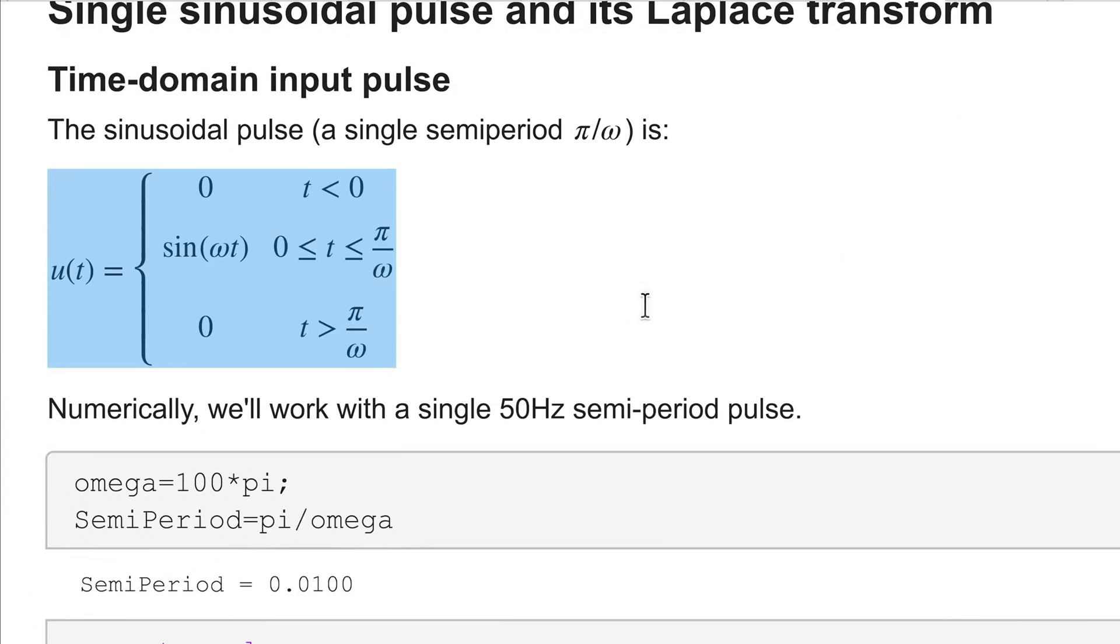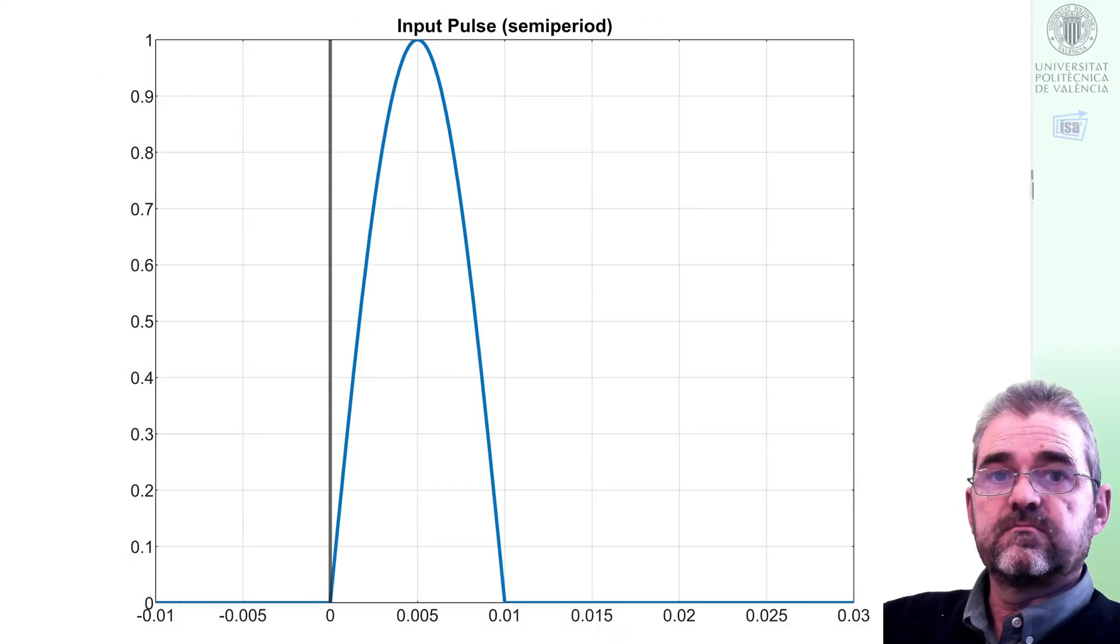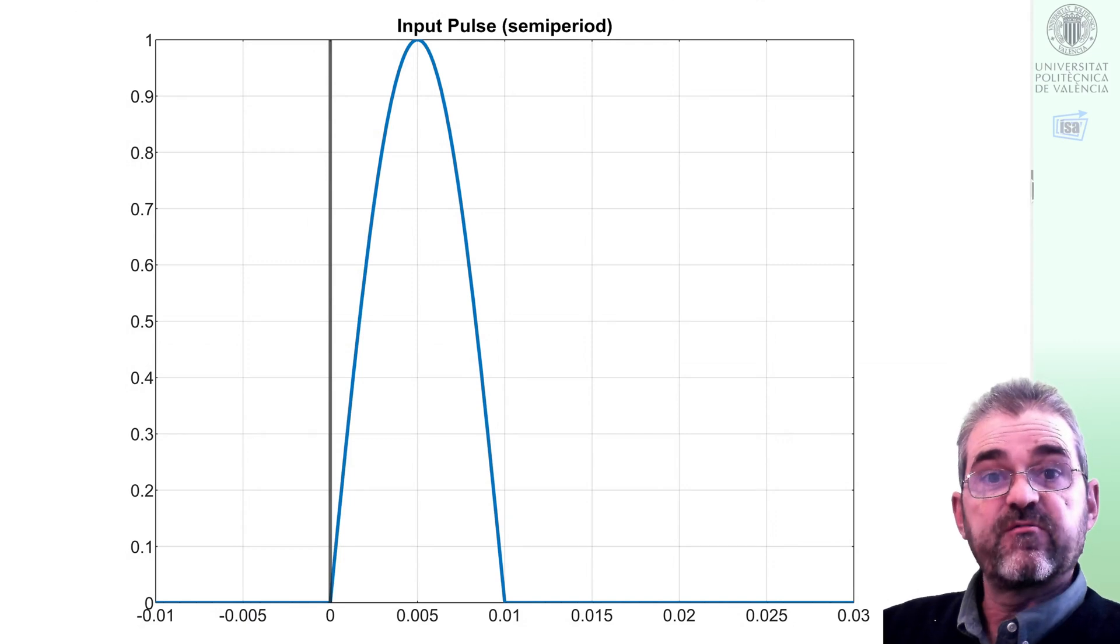With this expression whose plot is this one, so I have a half period of a 50 Hz sinusoidal wave so it's a 10 ms pulse.